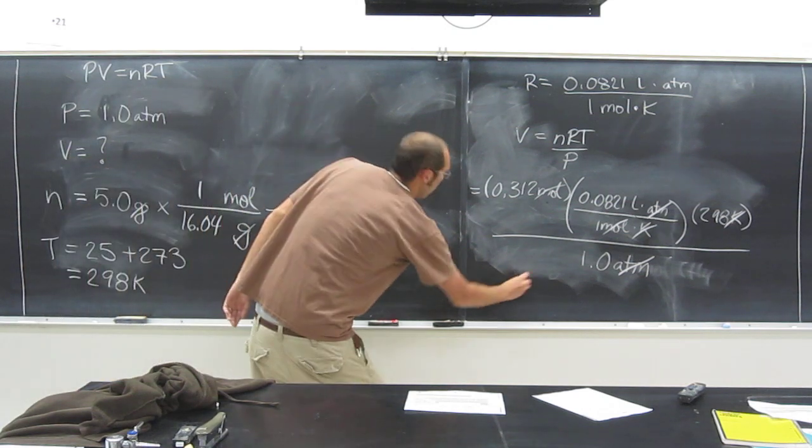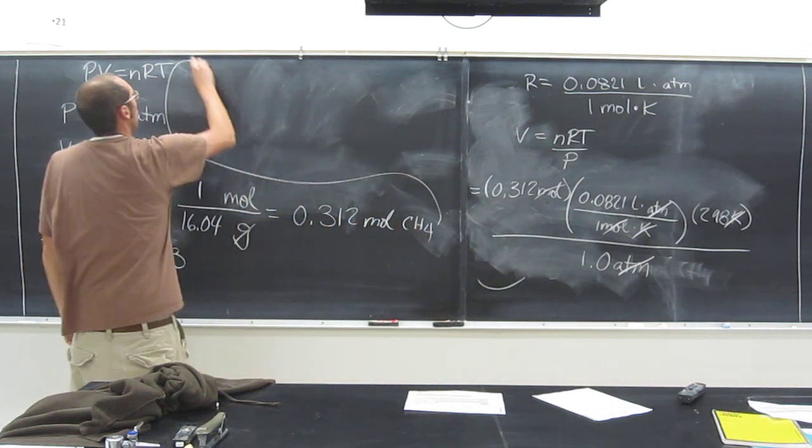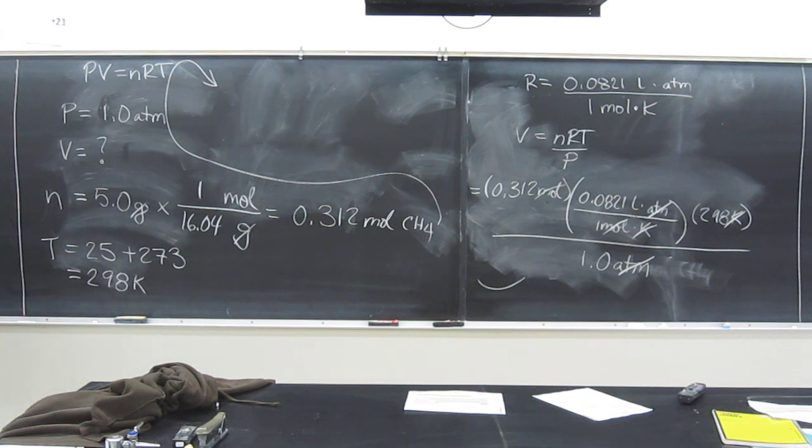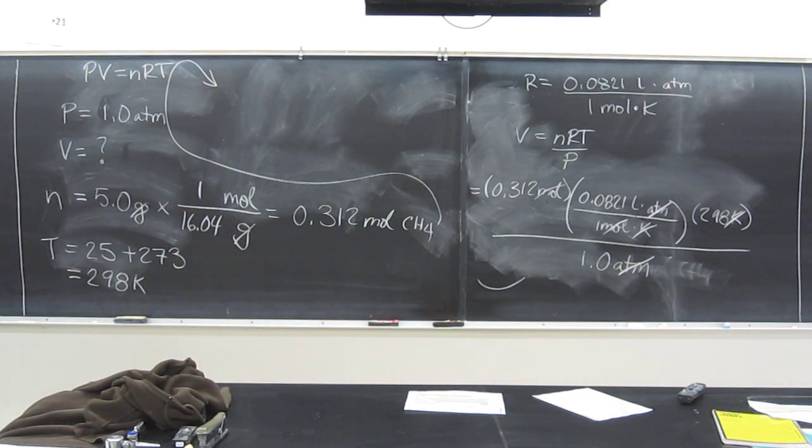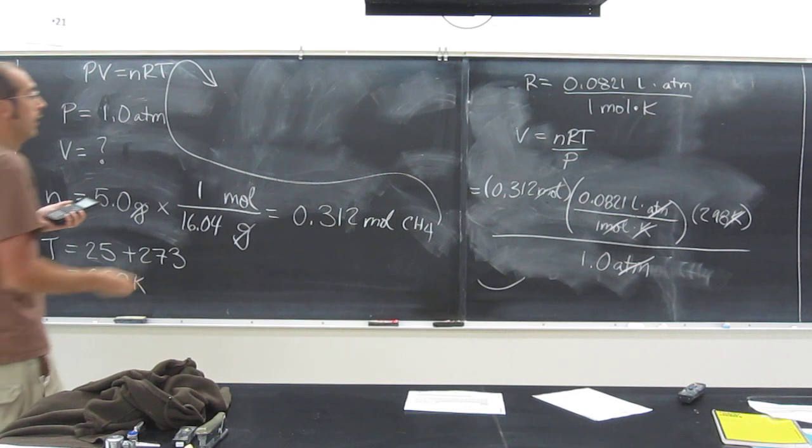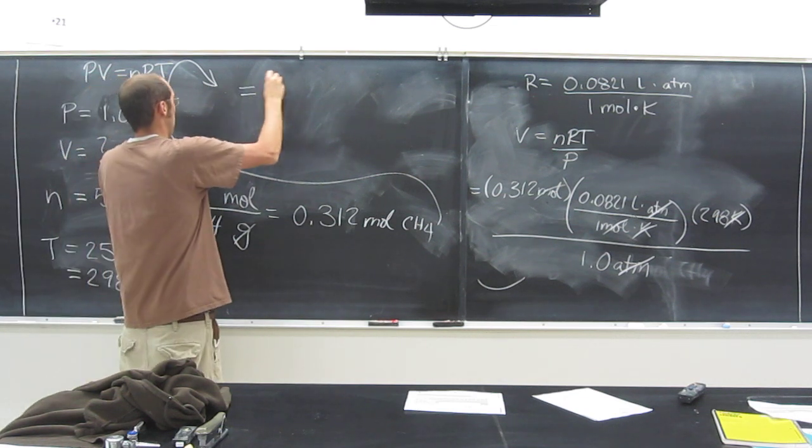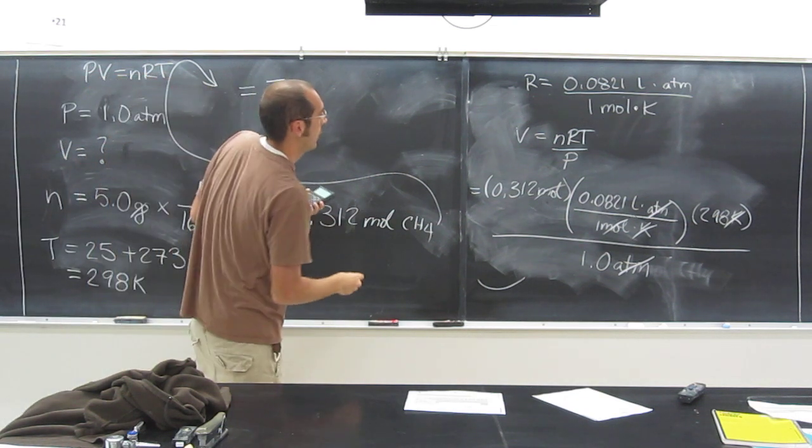So, let's just put this up here. So, let's just plug in. 0.312 times the gas constant, 0.0821 times 298 divided by 1. What'd you guys do? 7.63.